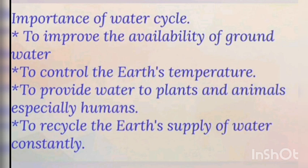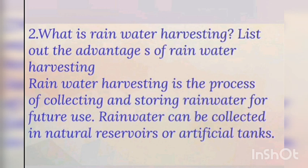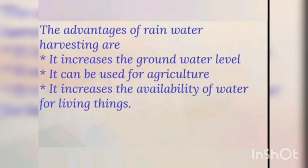Second question: what is rainwater harvesting? List out the advantages of rainwater harvesting. Rainwater harvesting is the process of collecting and storing rainwater for future use. Rainwater can be collected from natural reservoirs or artificial tanks. The advantages of rainwater harvesting are: it increases the groundwater level, it can be used for agriculture, and it increases the availability of water for all living organisms.